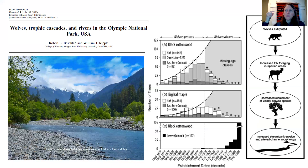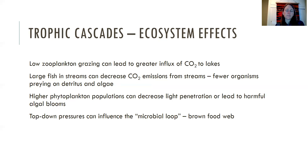You can go one step further. If wolves increase predation on elk and allow riparian plants to grow, it can actually change the way that rivers flow across their landscapes. There's a study showing how elk-driven reductions in riparian vegetation changed the channel structure of the rivers themselves.